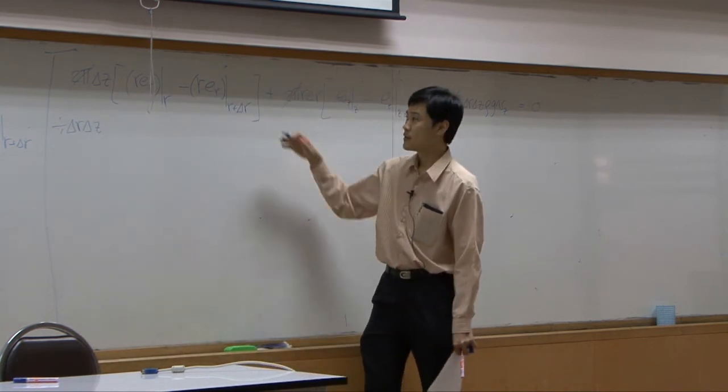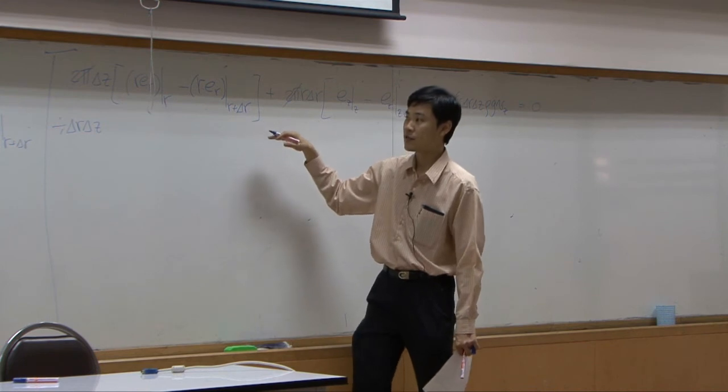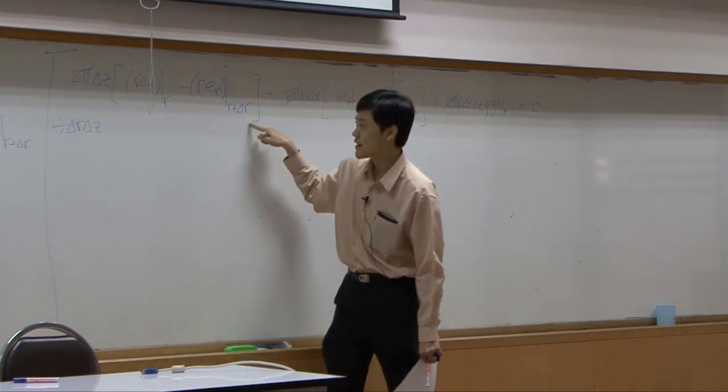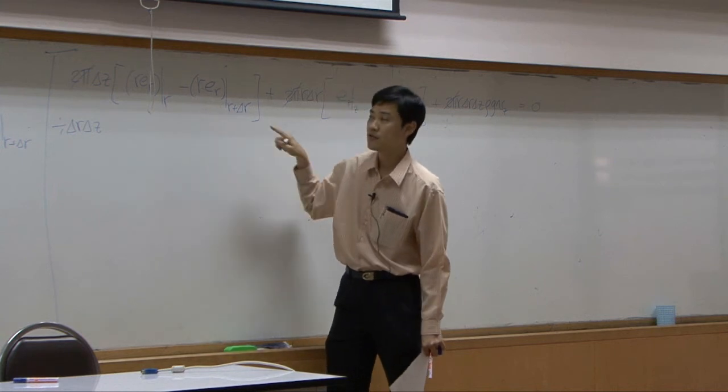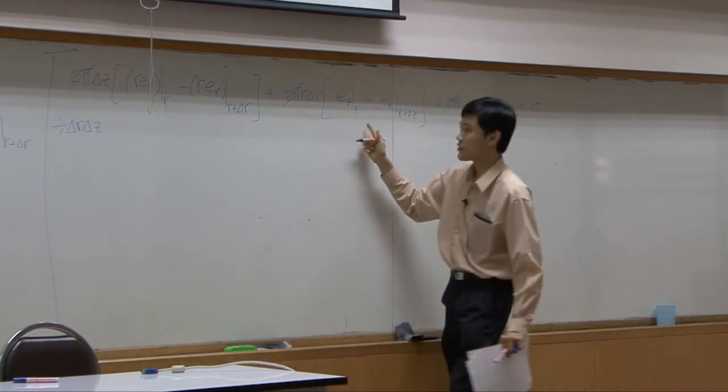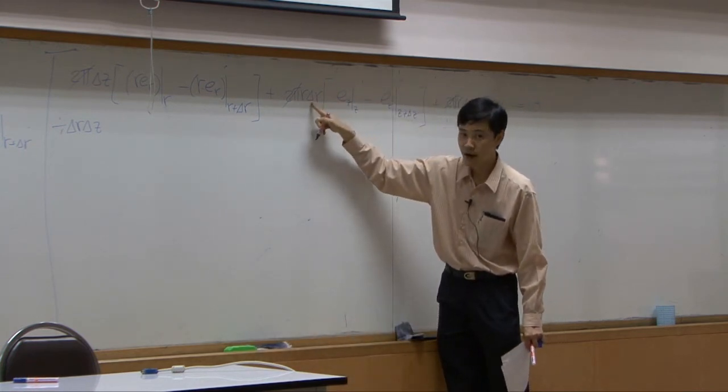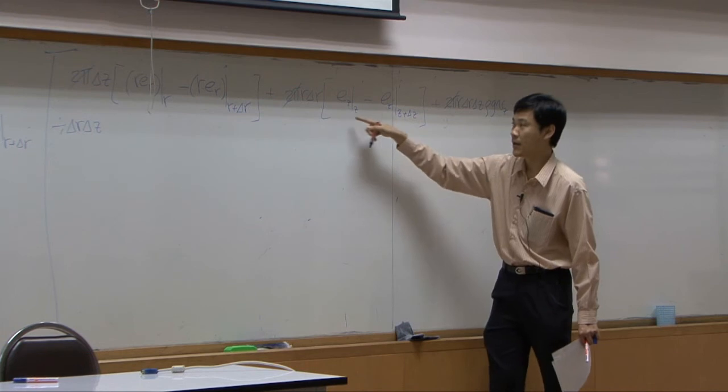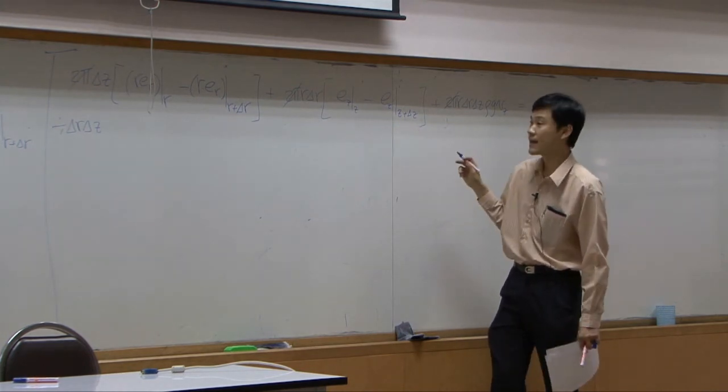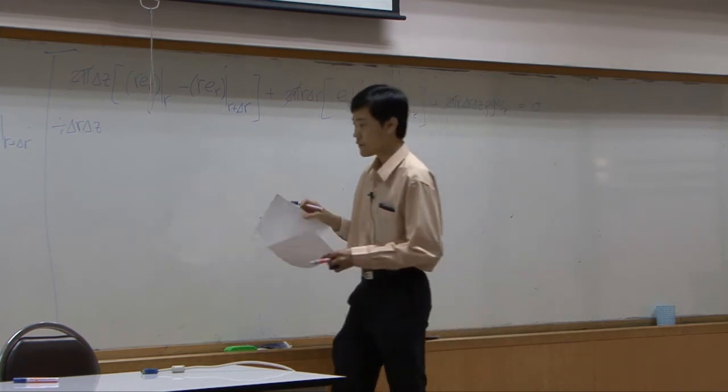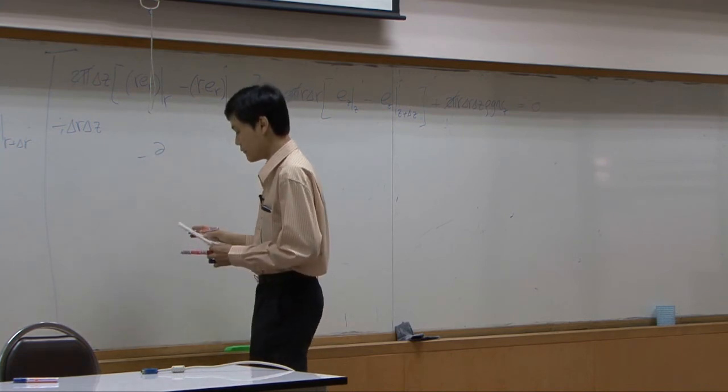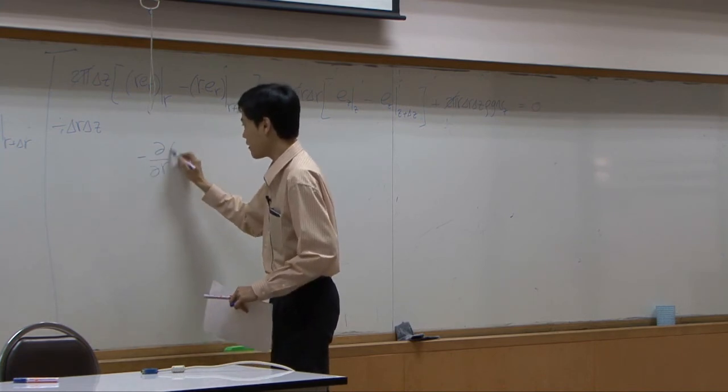So the first term, once you divide by delta r delta z, delta z here will be dropped, instead you have denominator to be delta r. This term delta r will be dropped and you will have denominator to be delta z. If you take a limit, the first term should give you minus differential of r e r.